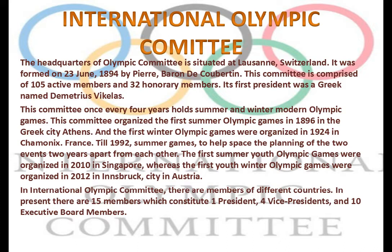In the IOC, there are members of different countries. At present, the executive board constitutes one president, four vice presidents, and ten executive board members. The IOC is also known as IOC — International Olympic Committee. It is a non-governmental sports federation that organizes multi-sports events, not single events, as it is an international body. Its official languages are first French, second English, and third the host country's language — for example, if India is hosting, the third language would be Hindi.